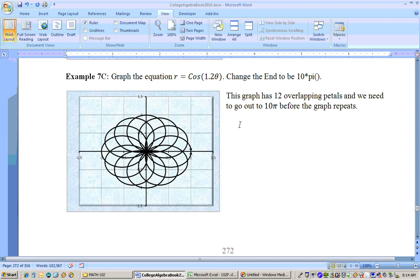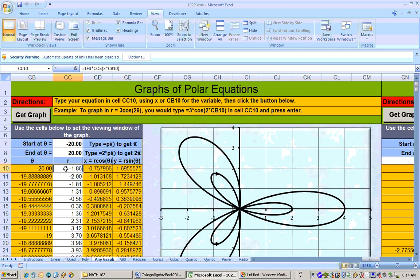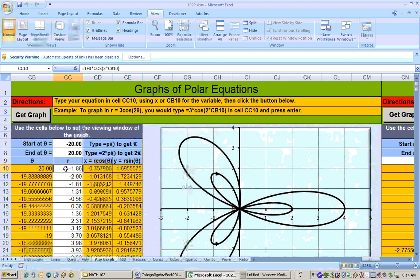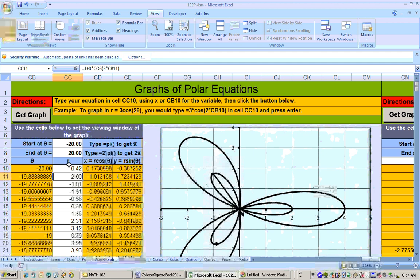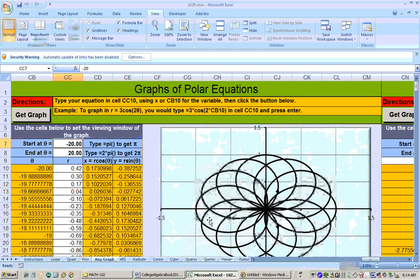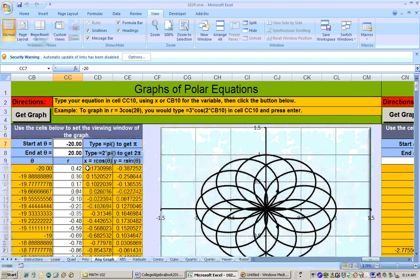Again, to graph something like cosine of 1.2 theta, it's easy to graph it. You would just type here, equals cosine of parentheses 1.2 times either x, or click on this cell, close parentheses, click on the Get Graph button, and you get a graph that looks like this. My start and end go from negative 20 to 20, and on a graph like this, you do have to go pretty far to see what it looks like.